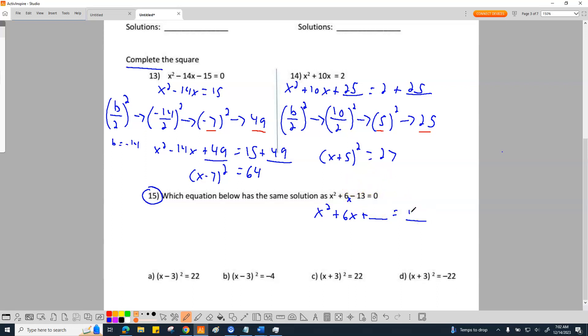you have to add 13, so you end up with positive 13. Now you need to find that b over 2 squared to find the answer.